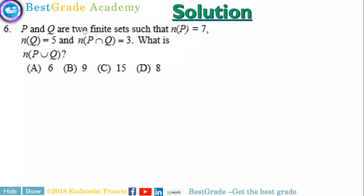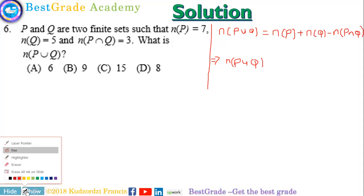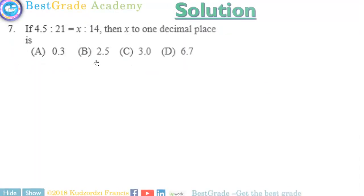y is equal to 11. Now, p and q are finite sets such that the number of elements in p is 7. We define: the number of elements in p union q equals the number of elements in p plus the number of elements in q minus the number of elements in the intersection of p and q. This implies the number of elements is given by 7 plus 5 minus 3, which gives us 9. That's the correct answer.